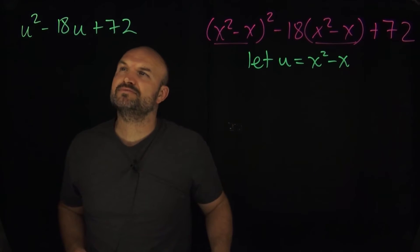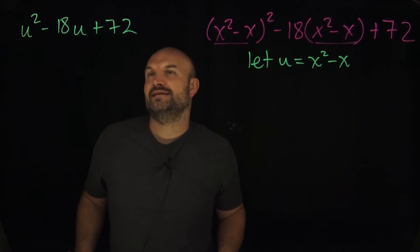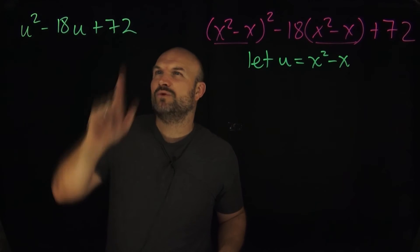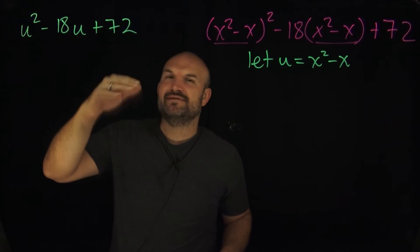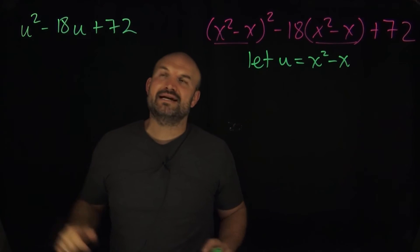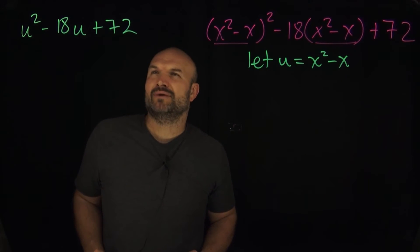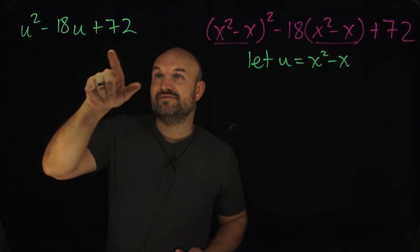So I need to think about what two numbers multiply to give me 72. Let's think about this. I know that 12 is divisible by 8, but 8 times 9 is 72. That's gonna give me 17, so it's close but it's not gonna work. So I'm thinking about another number.